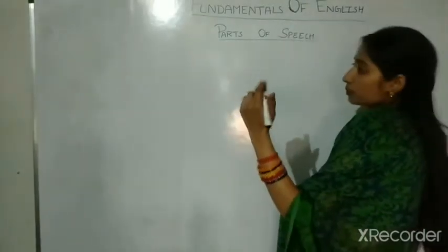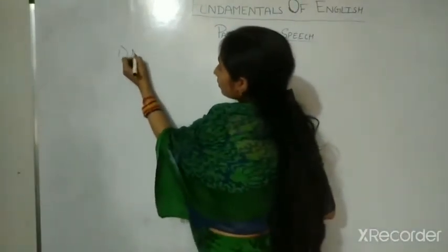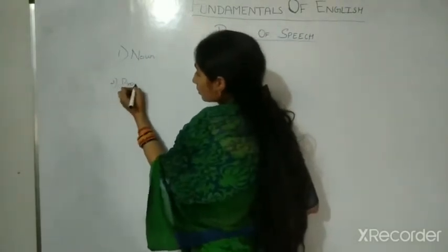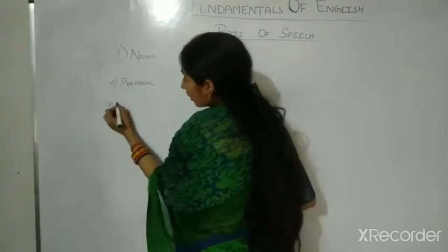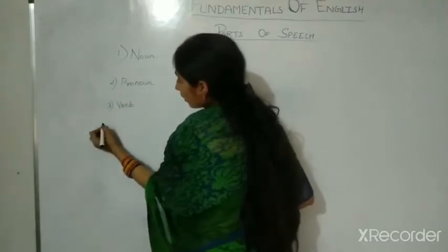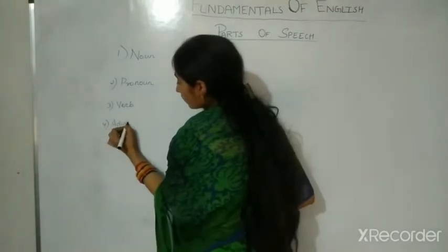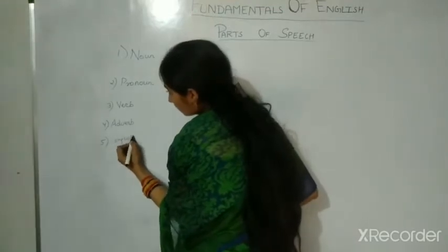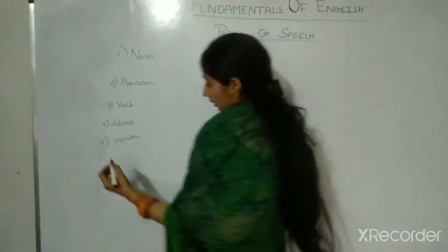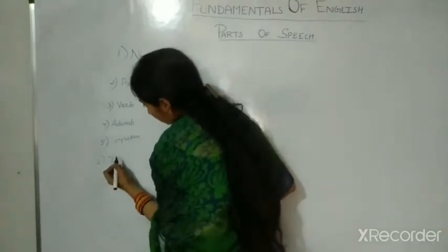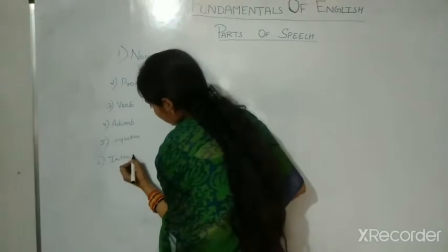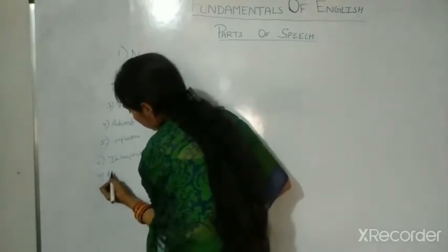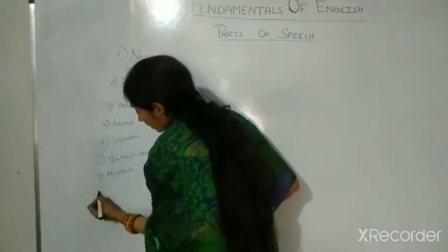The 8 parts of speech are: first is noun, second is pronoun, third is verb, fourth is adverb, fifth is conjunction, next is interjection, then adjective, and preposition.